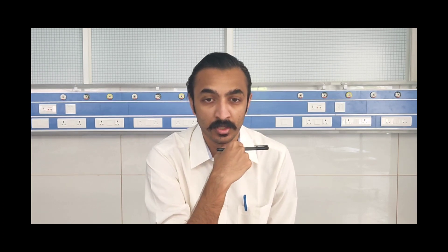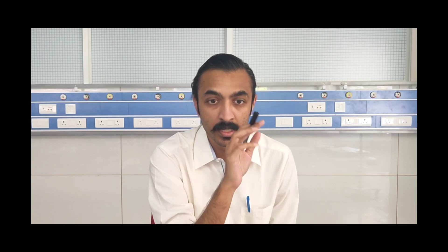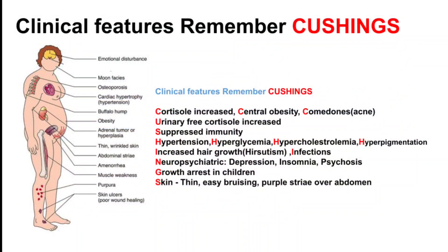Now let us see a mnemonic for Cushing's syndrome — the clinical features. You can remember it as CUSHINGS. C is for cortisol increase, central obesity, and comedones.